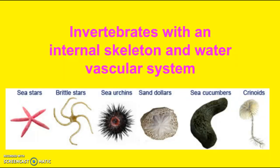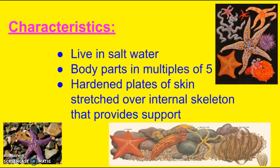Some examples are sea stars, also known as starfish, brittle stars, sea urchins, sand dollars, and sea cucumbers — all of those are considered echinoderms.